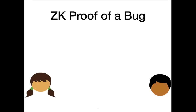I'd like to motivate this technique a bit. The question perhaps is why do we care about improving the performance of large proof statements that have conditional logic? What I'd like to show is one interesting use case for this technique that we discuss at length in our paper, which is about proving the existence of a bug in a codebase.